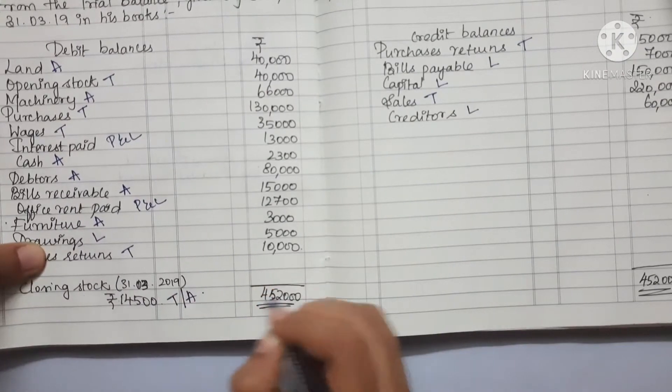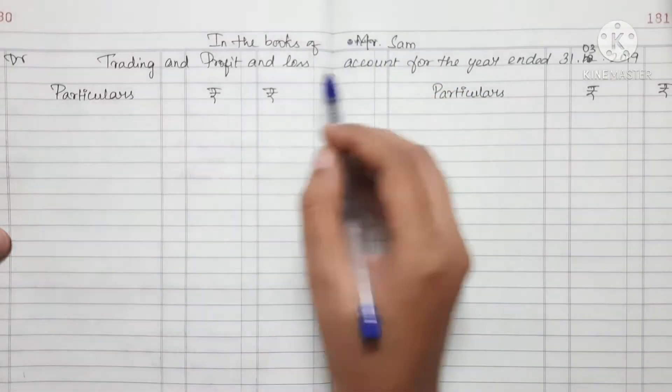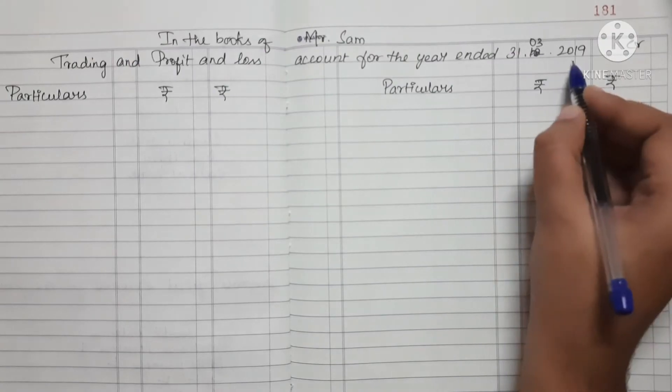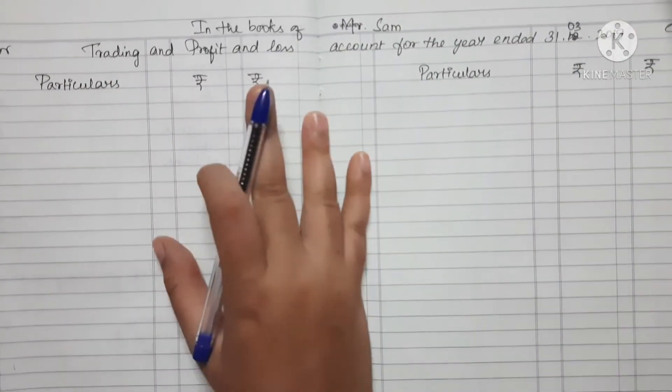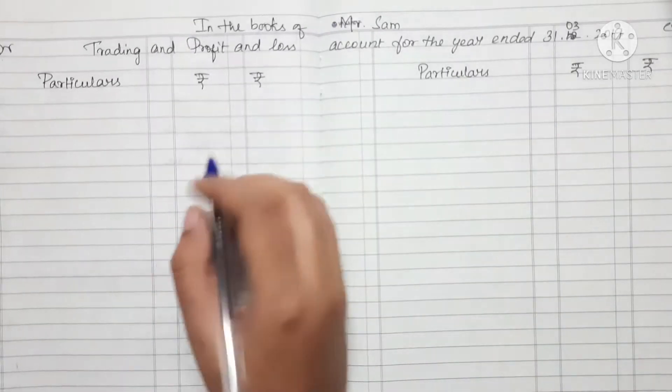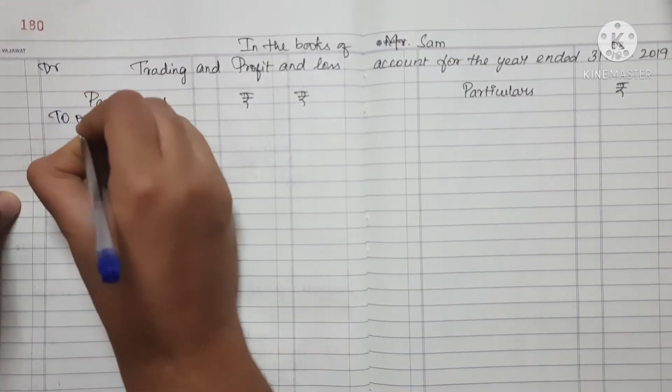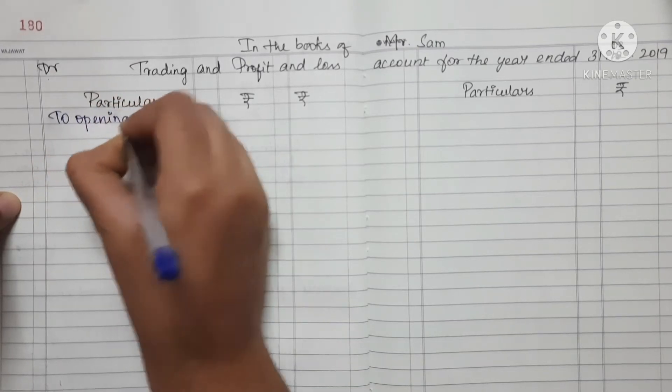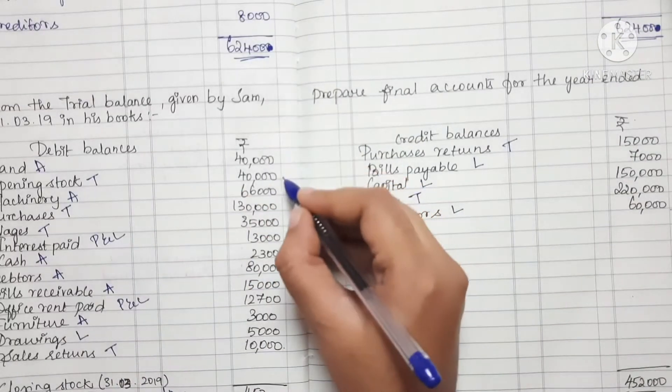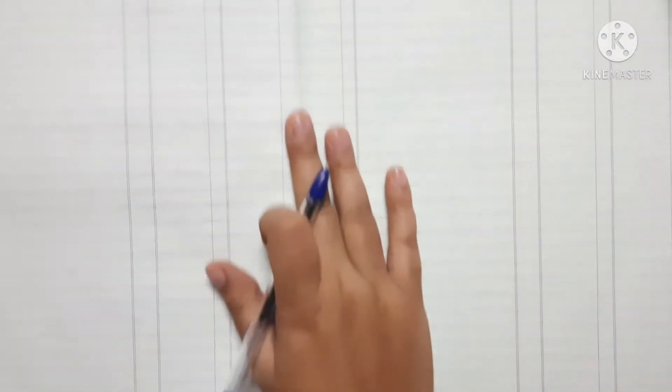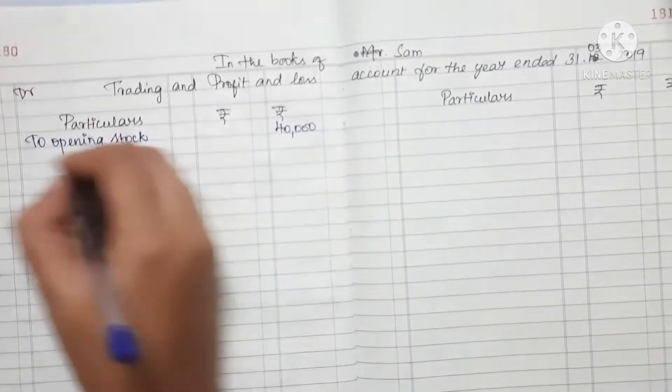Mr. Sham Trading and Loss Account for the year ended 31-03-2019. Debit side: Particulars in the first column, then Amount and Total columns. First, Opening Stock is 40,000 in the outer column.